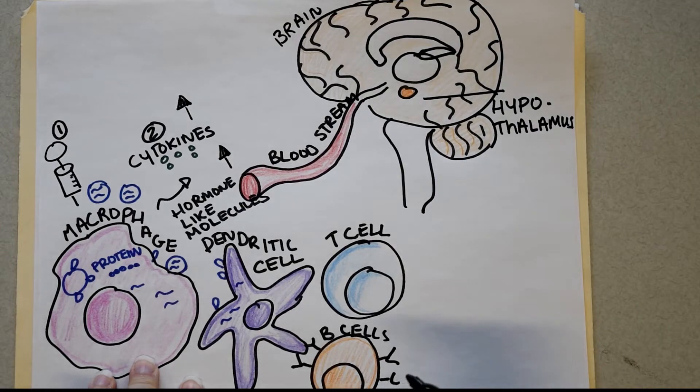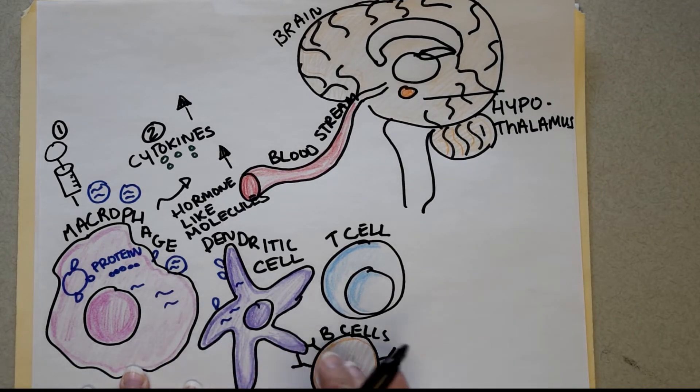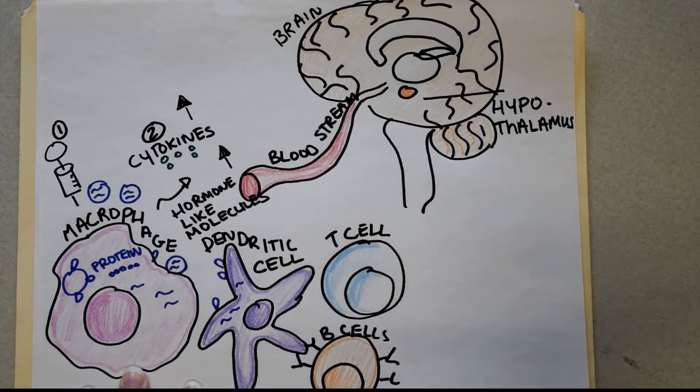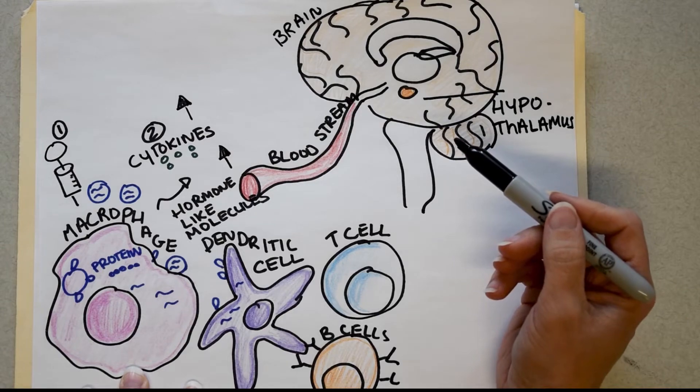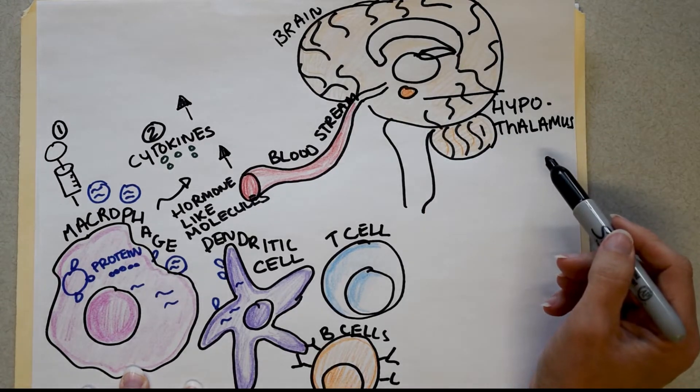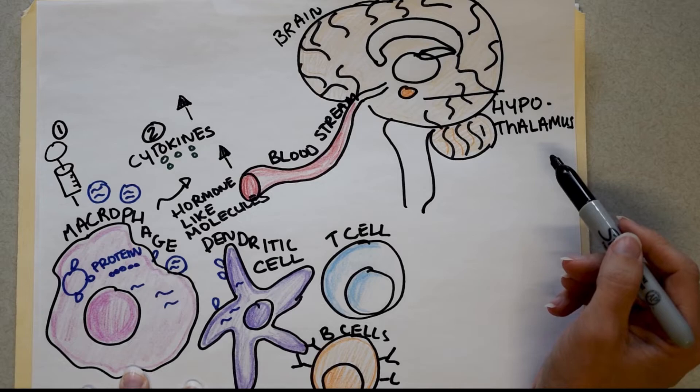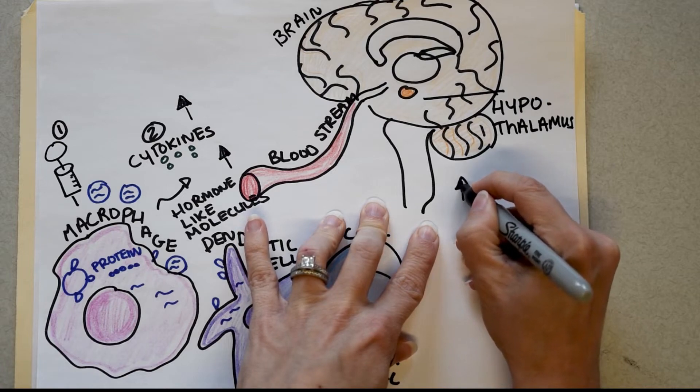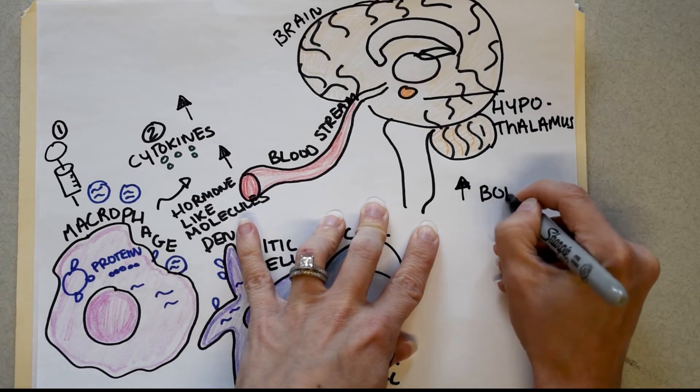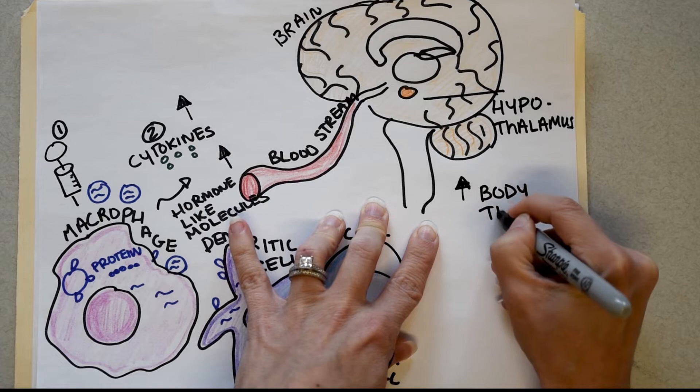But most importantly for us, this regulates your body temperature. So when macrophages, dendritic cells, T cells and B cells all combine their powers, they can send so many cytokines and hormone-like molecules into your brain that the hypothalamus realizes that you need to crank up your body temperature. And when you crank up your body temperature, you get a fever. Crank up that body temperature.